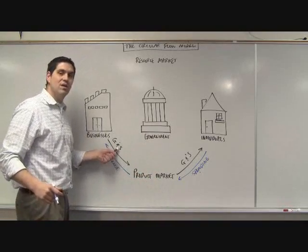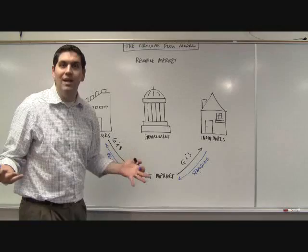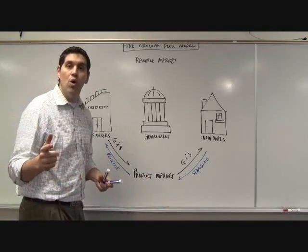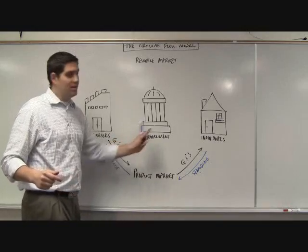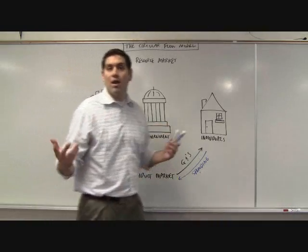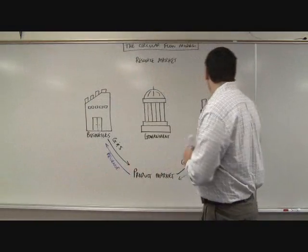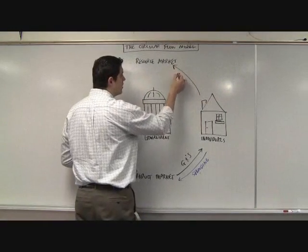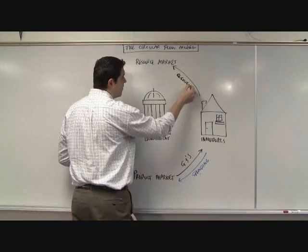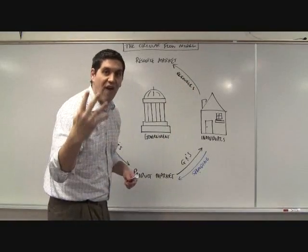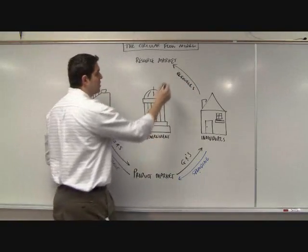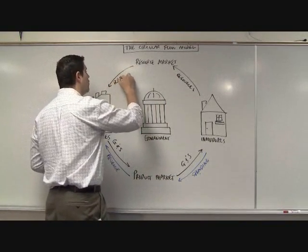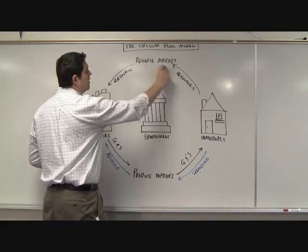To produce goods and services, firms can't just make it out of nowhere — they need resources. In the free market system, who owns the resources? Not the government — individuals. Me and you own our land, our labor, our capital, our entrepreneurship. These are the resources to produce stuff, also called the four factors of production: land, labor, capital, and entrepreneurship.